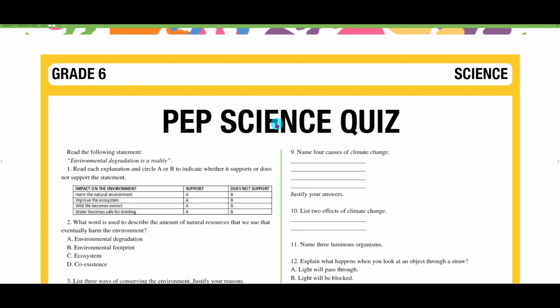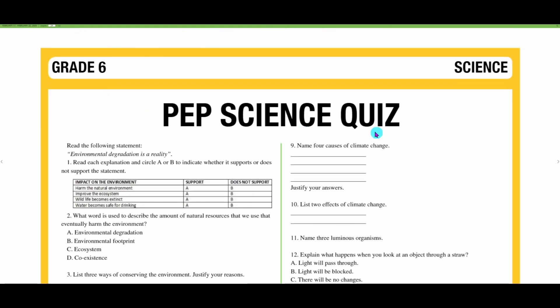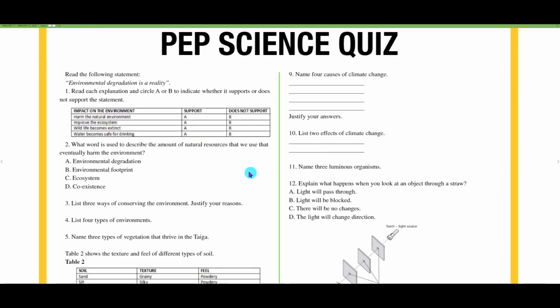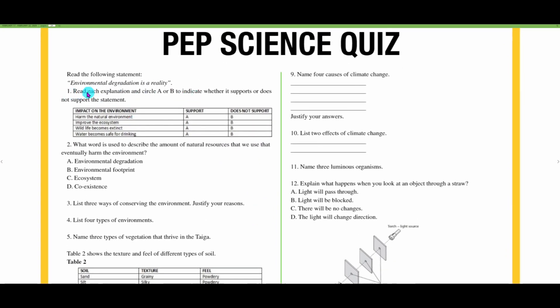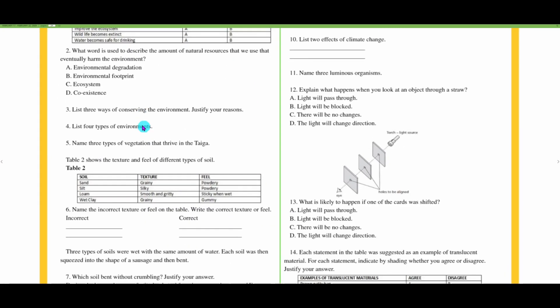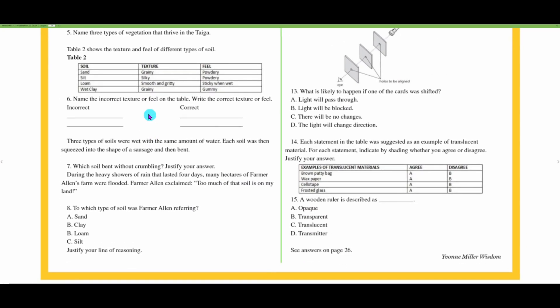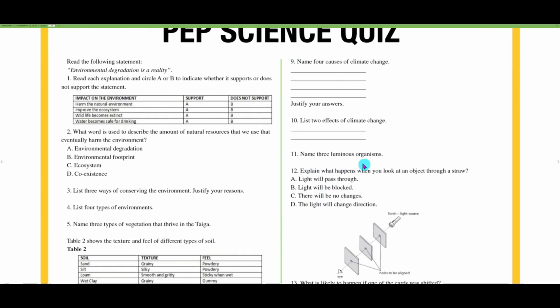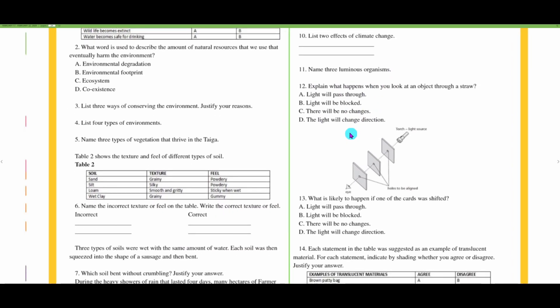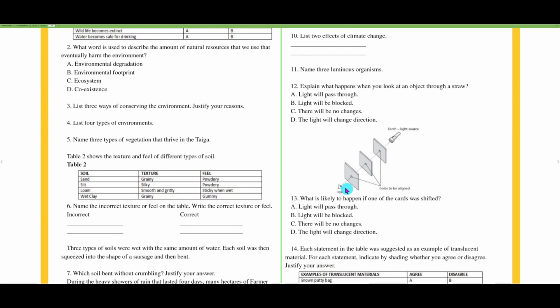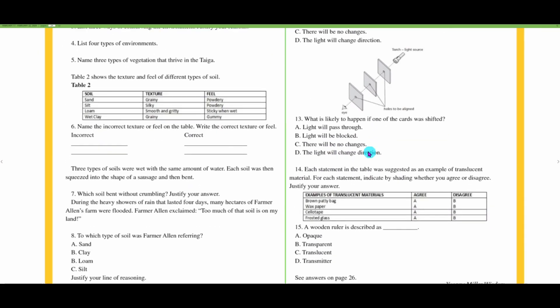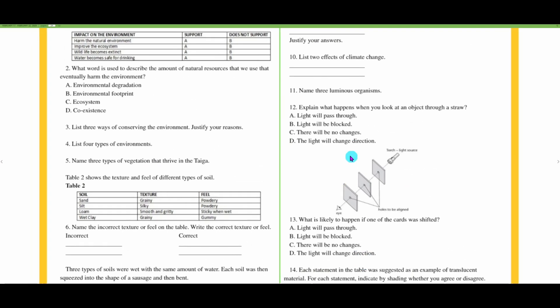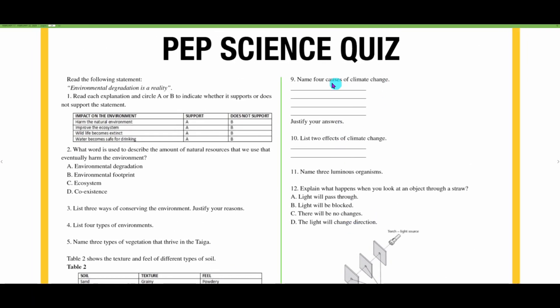What did we achieve in this episode? We looked at this PEP science quiz and these topics were from first term. Very important that we keep them fresh in our mind right through the year. We were looking at the environment, types of environment, soils, soil texture, soil structure. We looked at different types of organisms in the ecosystem and some of their features. We looked at how light behaves when it comes into contact with certain materials. Take the time to review this as much as possible to keep these concepts fresh in your mind. Take care, I'll see you in the next episode.